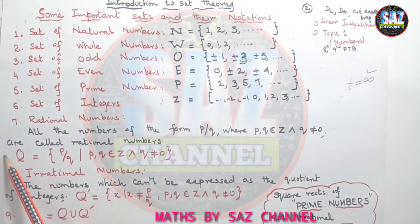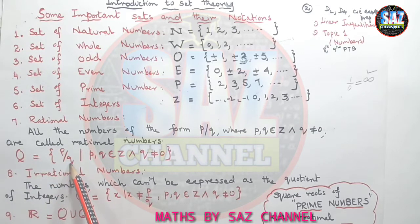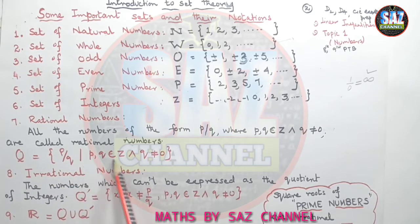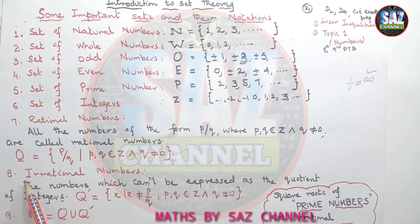And in set language and notation, set of rational numbers will be written as p over q such that p and q are integers and q should not be equal to 0.